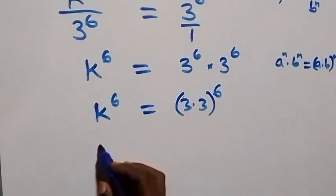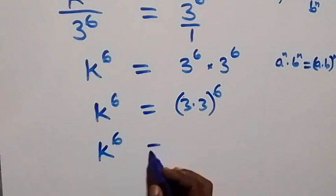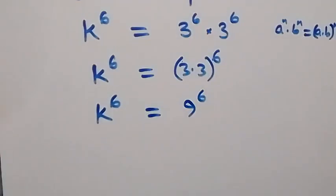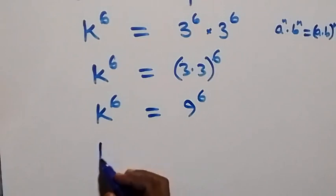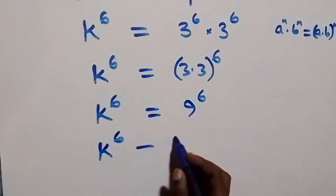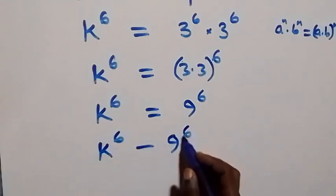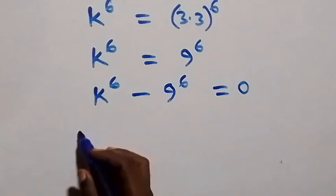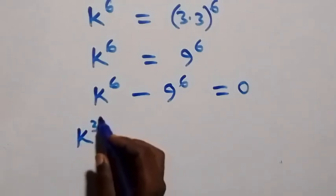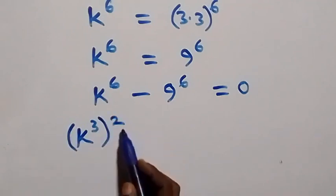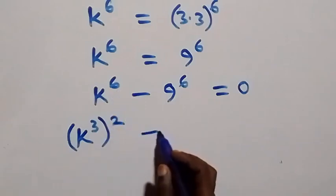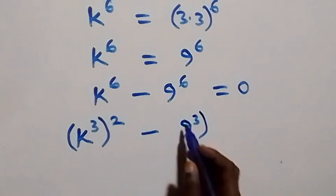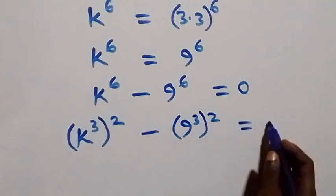And this is the same thing as k raised to power 6 equals to 9 raised to power 6. Then let's take 9 raised to power 6 to the left, then it becomes minus. So we have k raised to power 6 minus 9 raised to power 6 equals to 0. And we can equally write this as (k raised to power 3) raised to power 2, from the law of indices, minus (9 raised to power 3) raised to power 2, which is equal to 0.